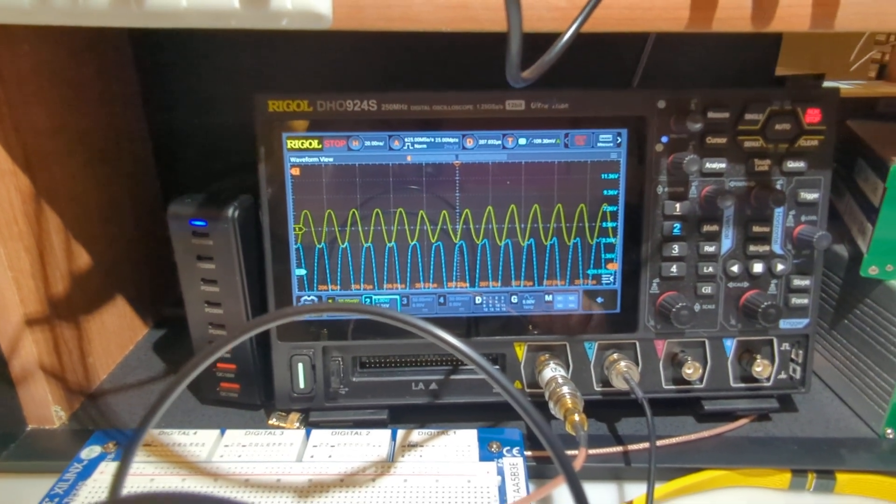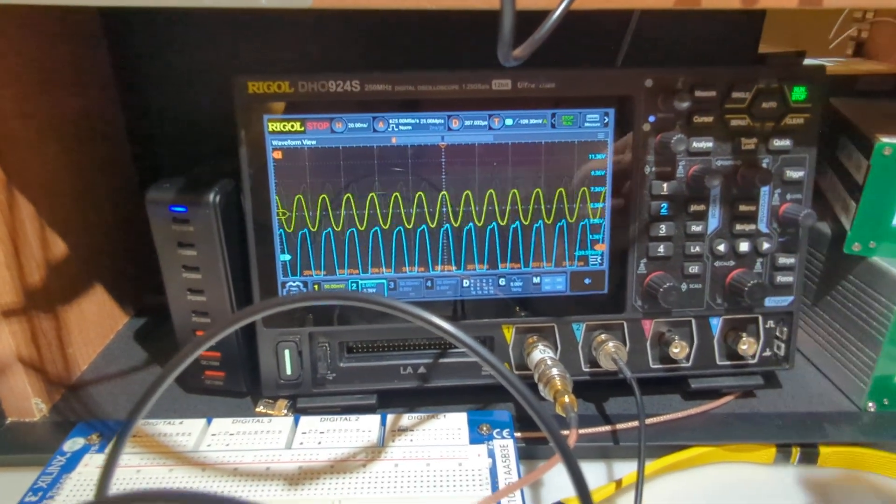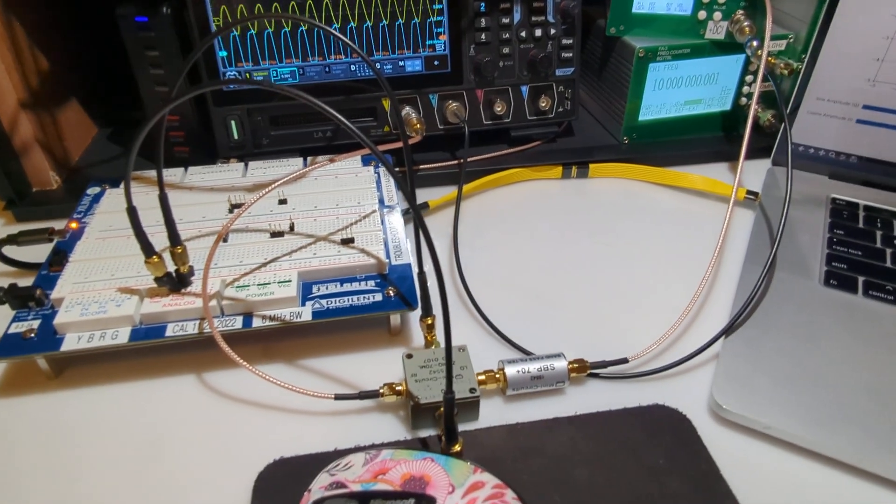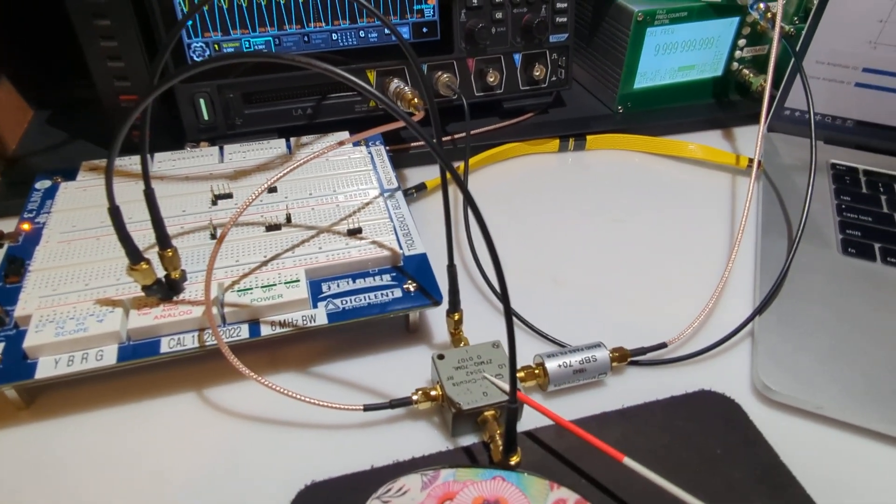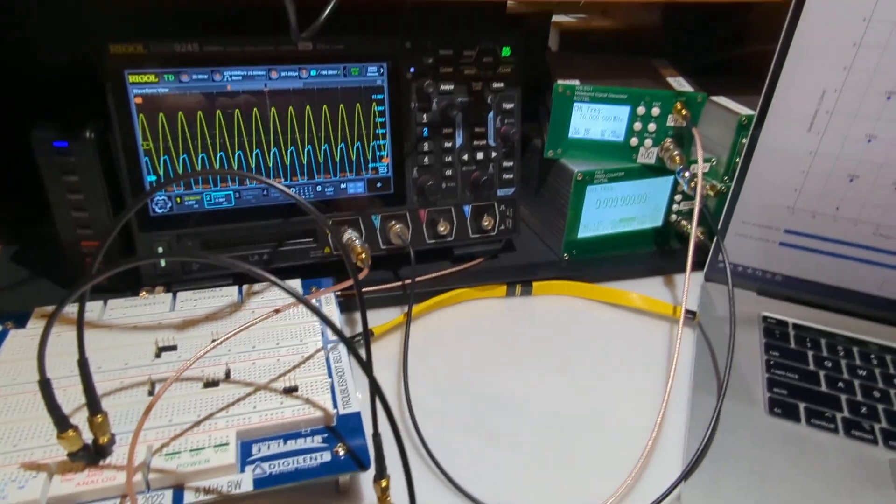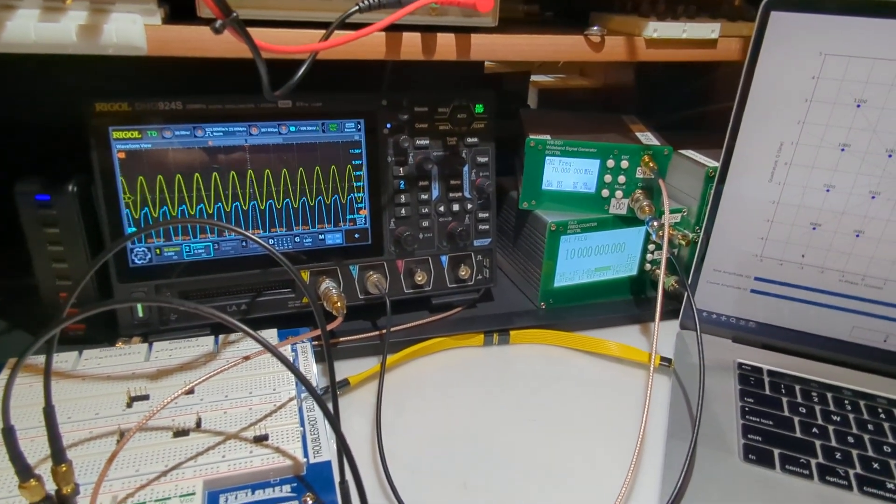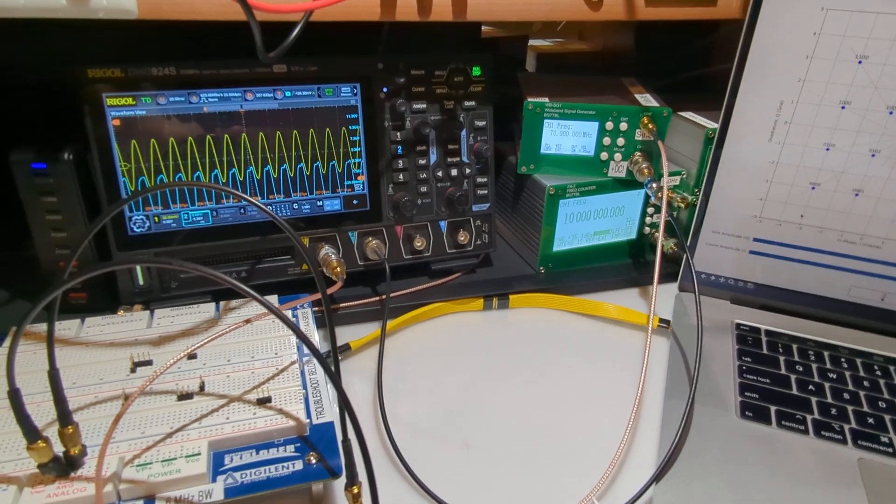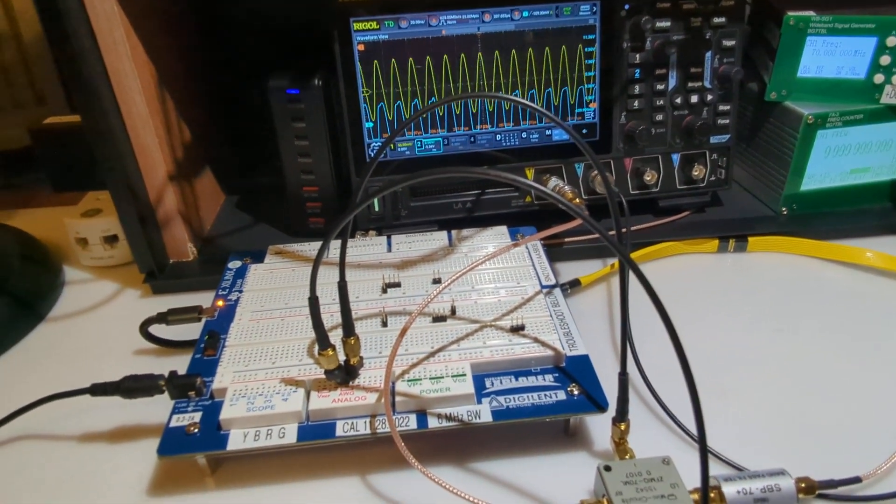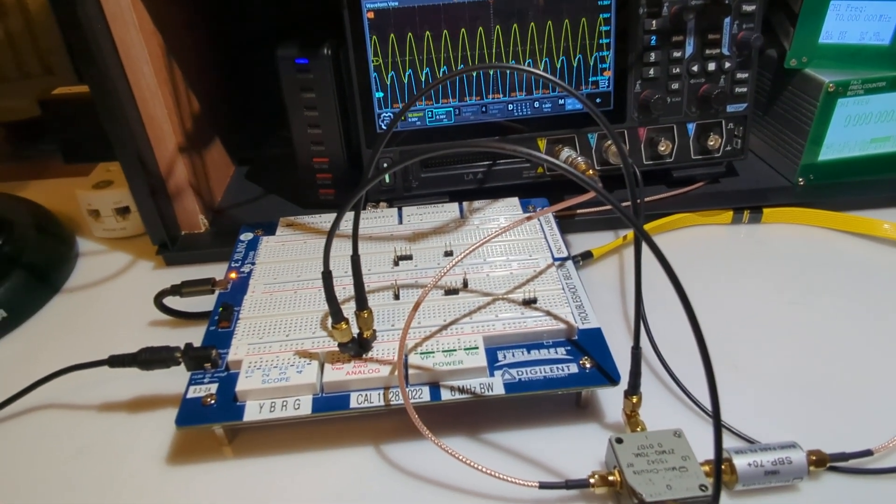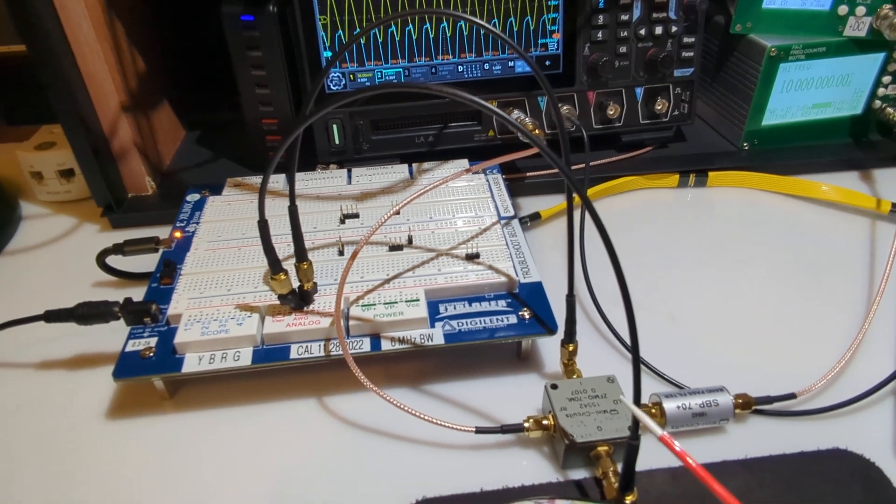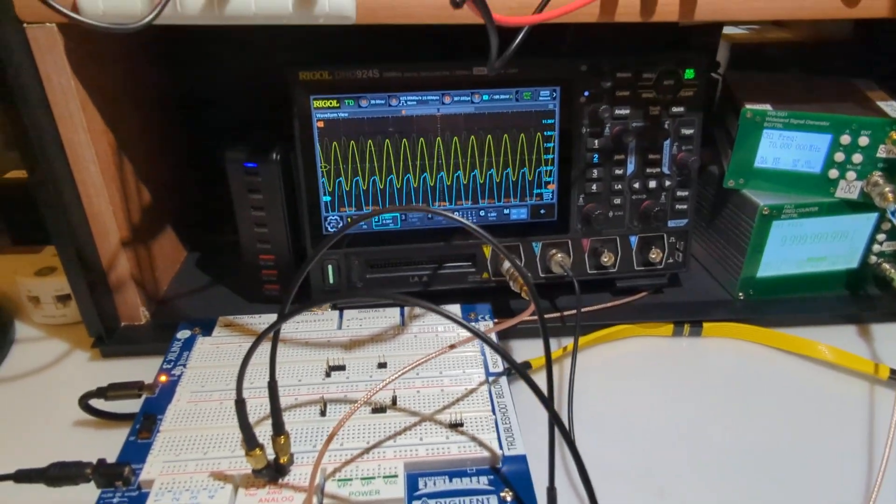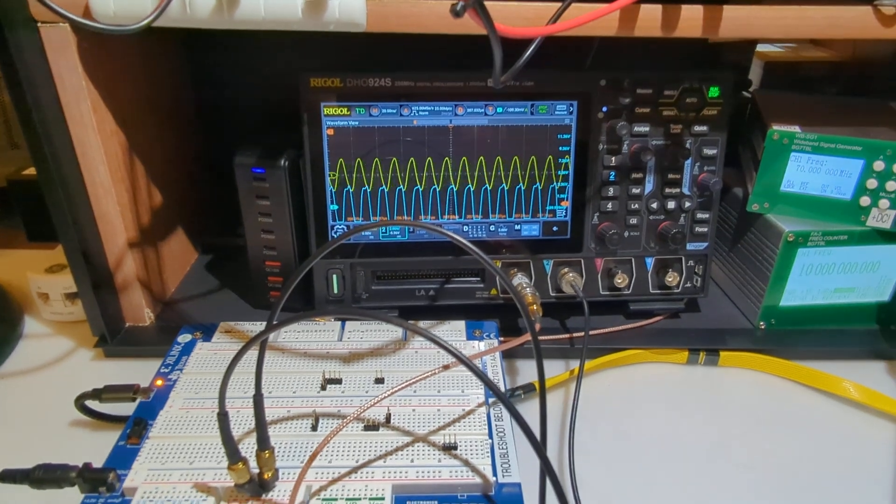So that is showing, once again, the physical implementation with a mini-circuits quadrature modulator, just using a signal generator at 70 megahertz for our carrier wave. And then the digital and electronic explorer board to send digital signals into the I and the Q inputs to produce our quadrature output RF signal.